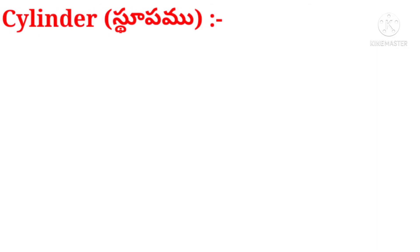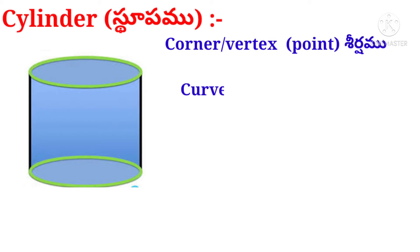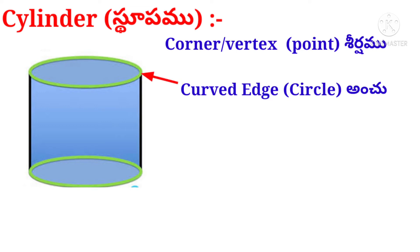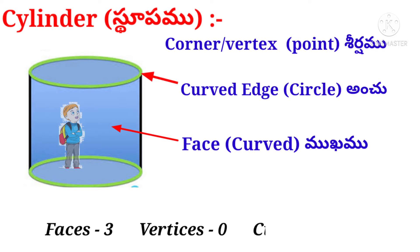Now let us take a picture of a cylinder. Observe that there are no corners, so no vertices. The edges are curved — one in the flooring and one in the ceiling. Suppose a boy entered a room in the shape of a cylinder. He observed a curved face on the sides, a circular face in the flooring, and a circular face in the ceiling — total three faces. No vertices (zero), and two curved edges: one in the flooring and one in the ceiling, each in the shape of a circle.